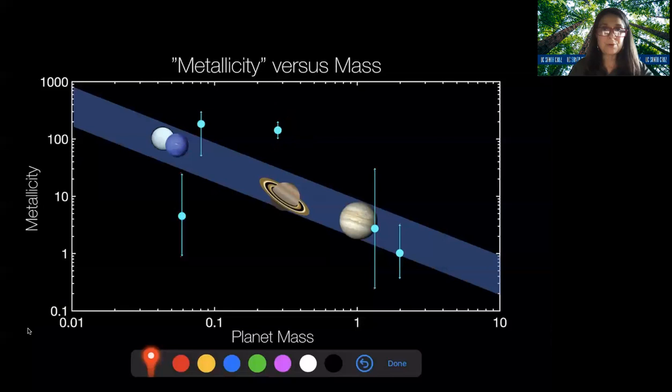The good news is that Webb is going to not only have very small error bars because of its larger aperture mirror, but it's also going to be able to extend us down to smaller planets. So we'll be able to see if this trend extends all the way down to the sub-Neptunes and super-Earths that we were talking about earlier.